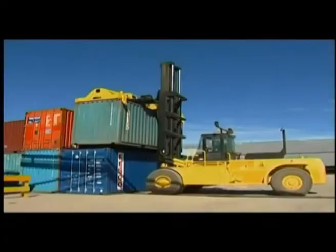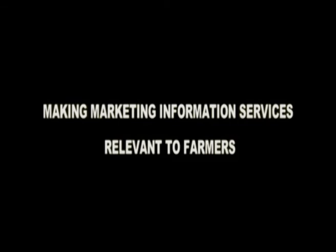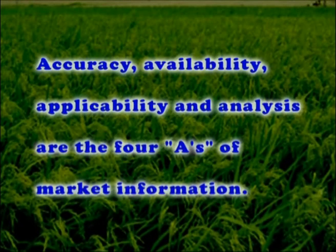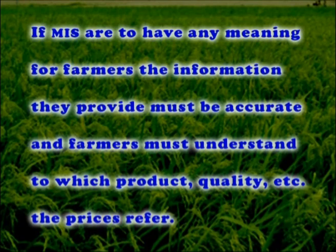Making marketing information services relevant to farmers: Accuracy, availability, applicability, and analysis are the four A's of market information. If market information systems (MIS) are to have any meaning for farmers, the information they provide must be accurate and farmers must understand to which product, quality, etc., the prices refer. Furthermore, even if prices are completely accurate, they are of little use if they are only available to farmers too late for them to use effectively.